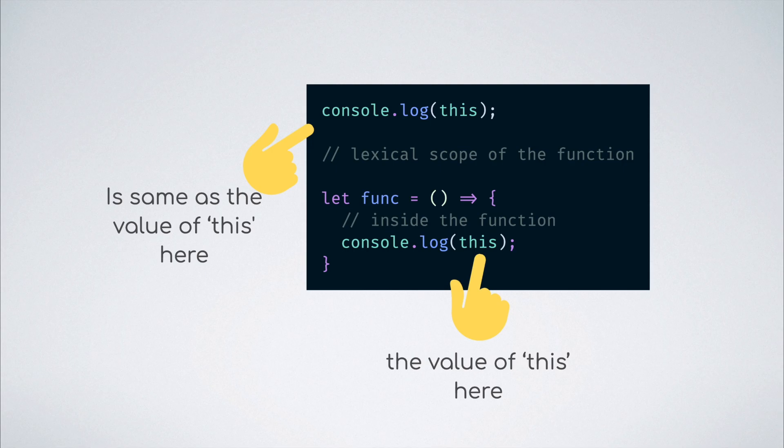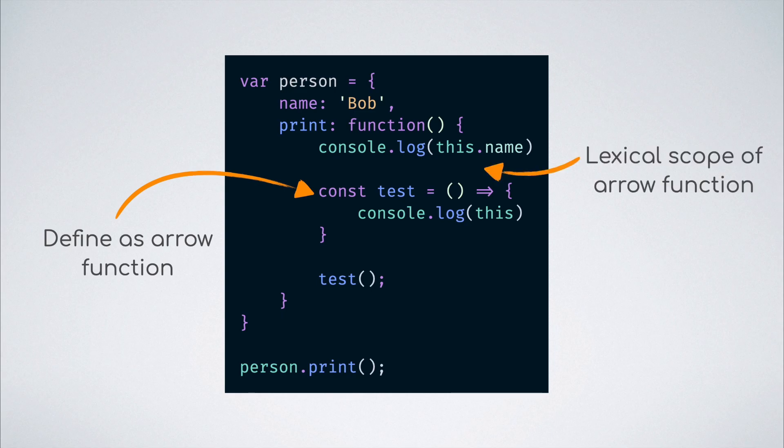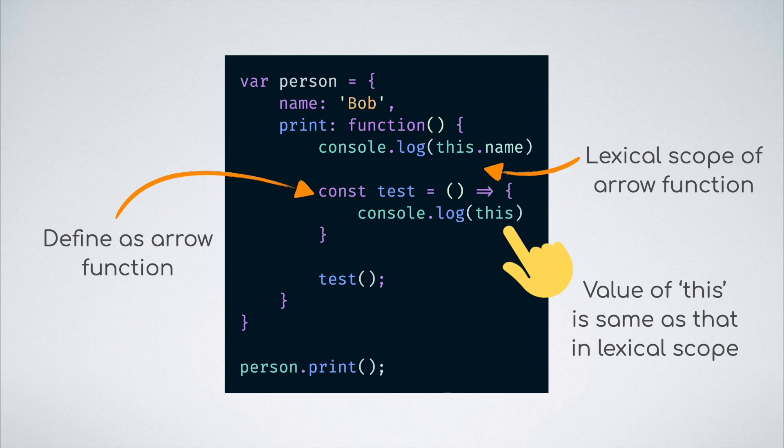This is what makes it an ideal candidate when defining functions inside of object methods. If we take the earlier example and tweak it so that the inner function is defined as an arrow function, we can see that the this keyword inside of that function still points to the person object. This is because the value of this from the lexical scope of the test function is retained inside of the function as well.